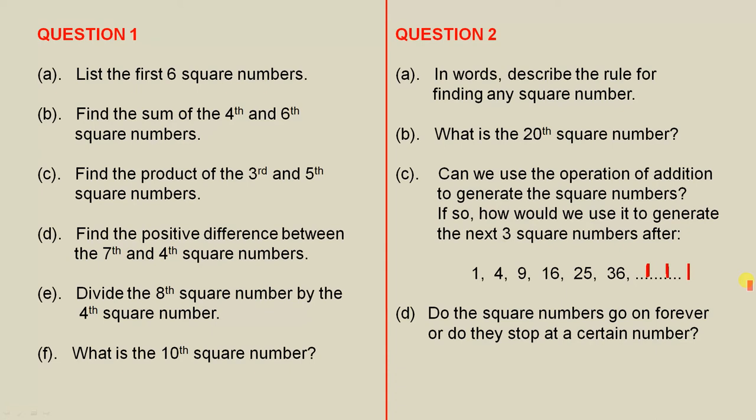Do the square numbers go on forever, or do they stop at a certain number?